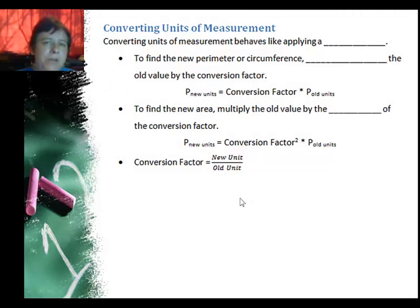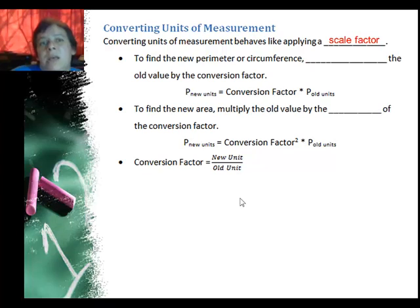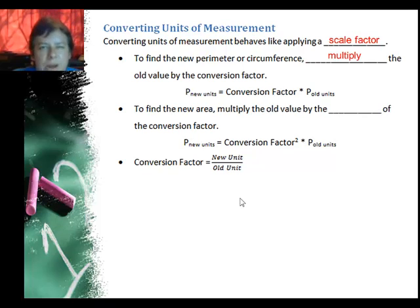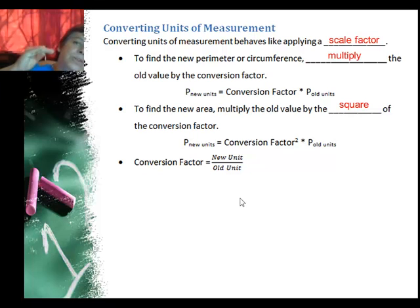Another thing that's similar but not exactly the same is converting units of measurement. Converting units behaves a lot like applying a scale factor. To find the new perimeter or circumference, multiply the old value by the conversion factor — that's like your scale factor. To find the new area, multiply the old value by the square of the conversion factor. The conversion factor is always the new units over the old units.